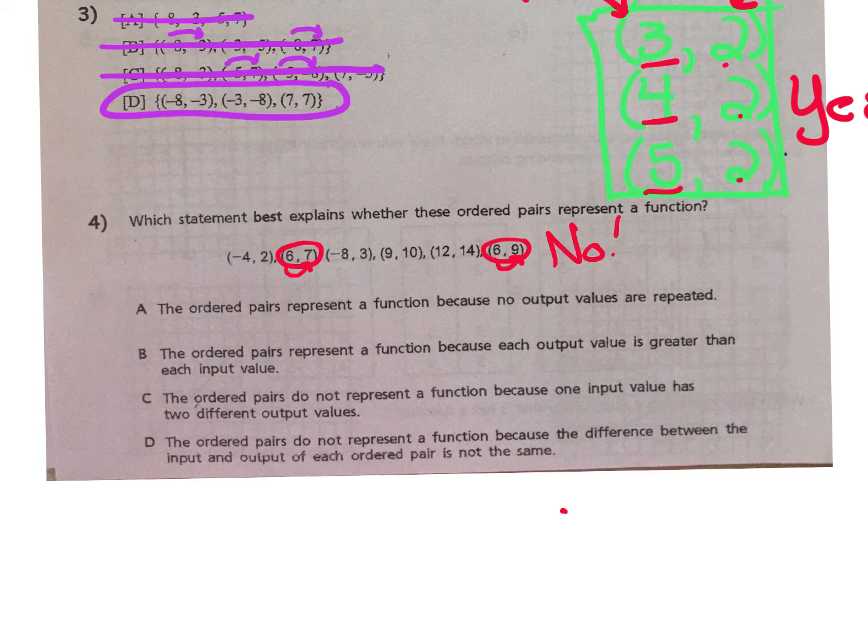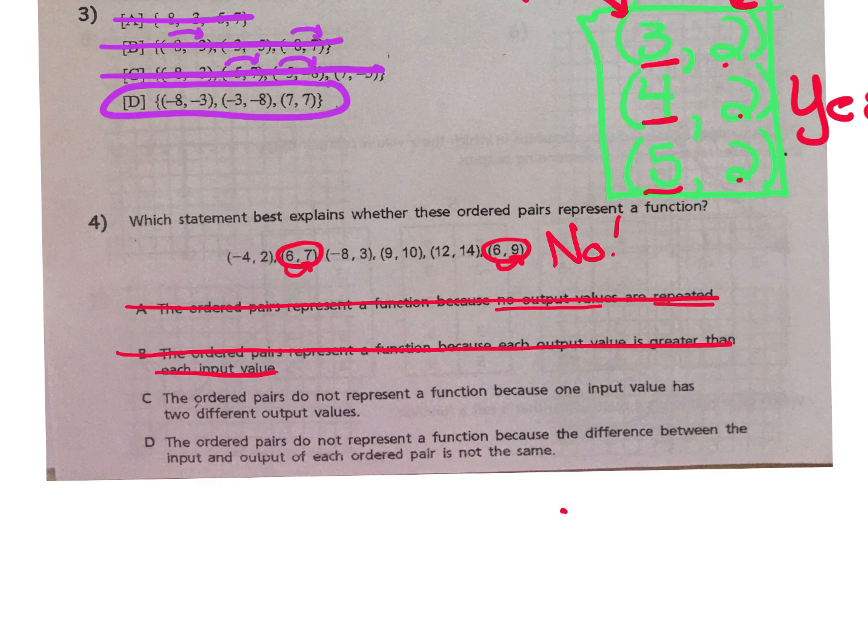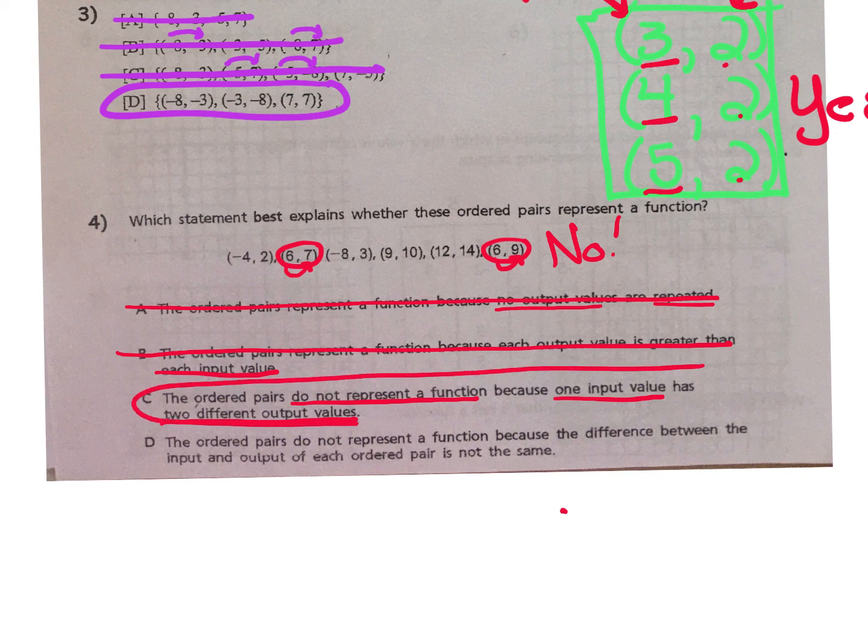Let's read A, B, C, and D, and determine which one of these statements best represents what's happening with this particular problem. For A, the ordered pair represents a function because no output value is repeated. That's not what we're looking for. That is not accurate because we already know this is not a function. And letter B states, the ordered pairs represent a function. And I don't even need to finish that statement because we know it does not represent a function. Letter C, the ordered pairs do not represent a function because one input value has two different output values. And that is true. So, C best represents the situation.